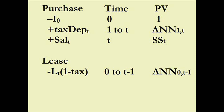Those IRS variants include double declining balance, sum of the years digits, ACRS — the accelerated cost recovery system — but here let's make it straight line because it makes the computations and illustrations easier. And then there's salvage value.